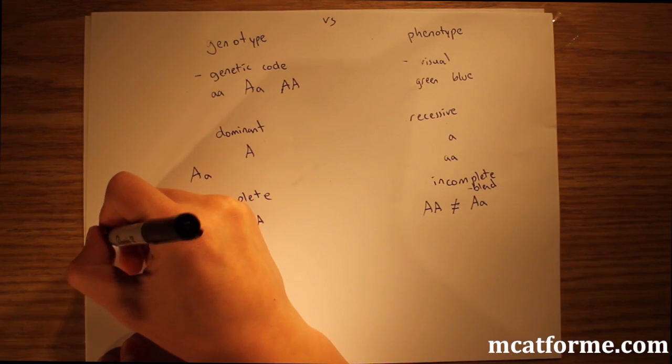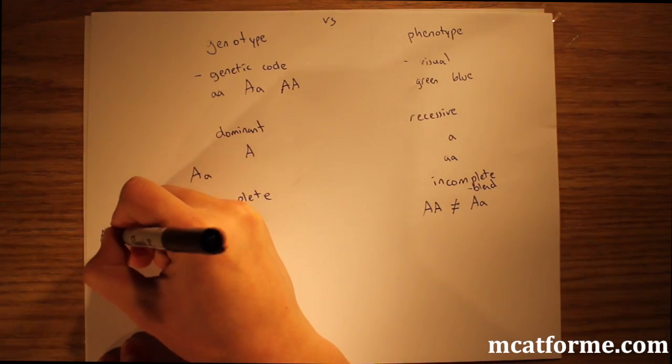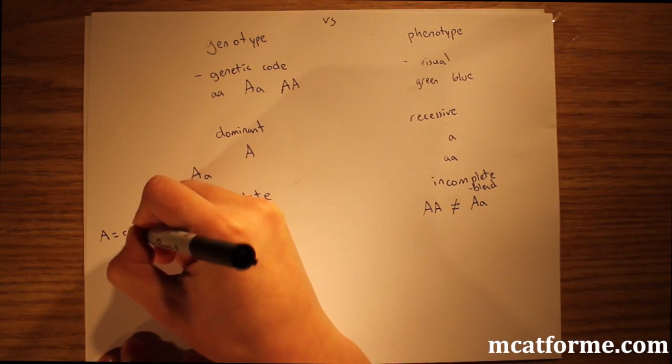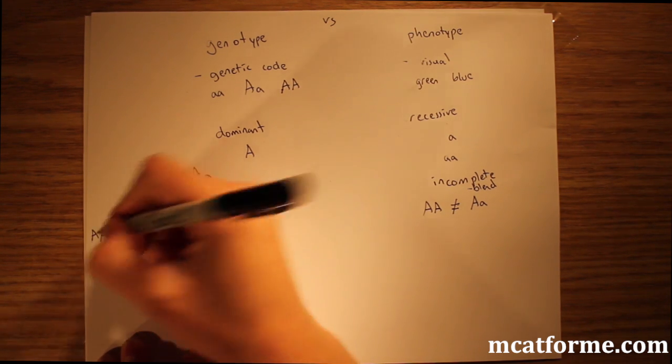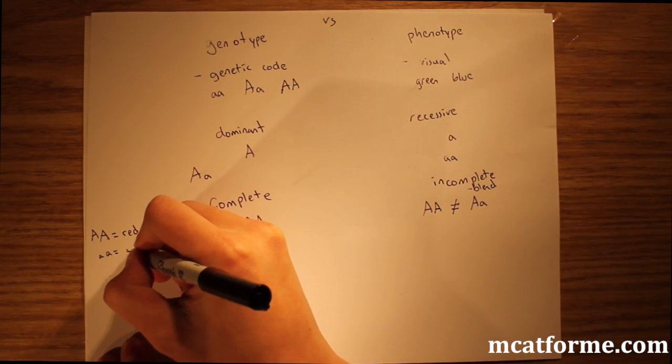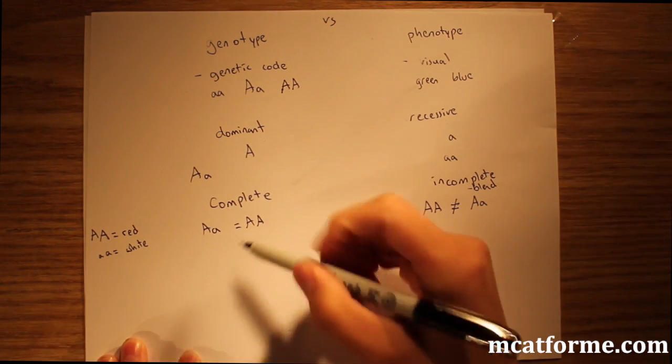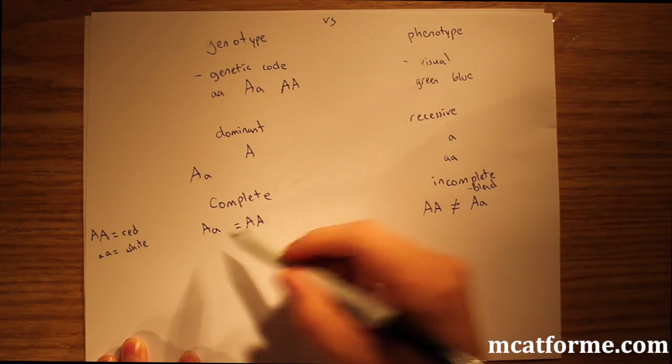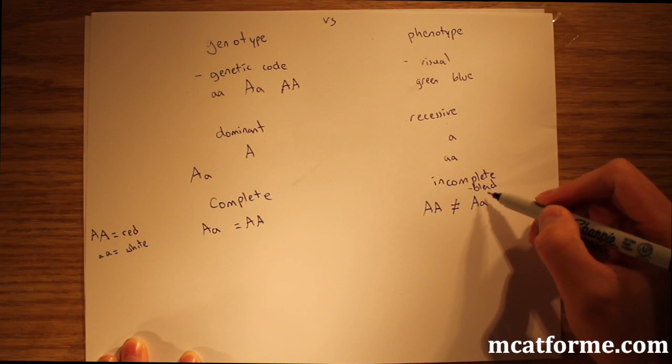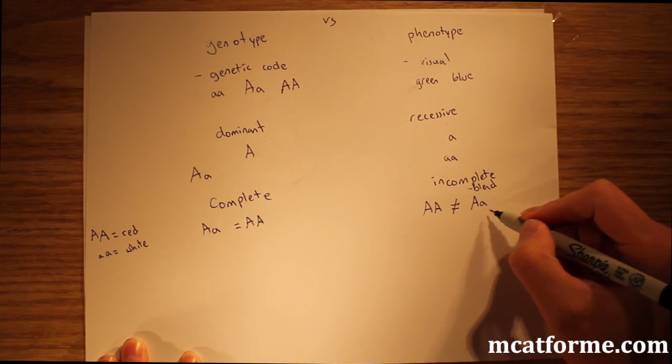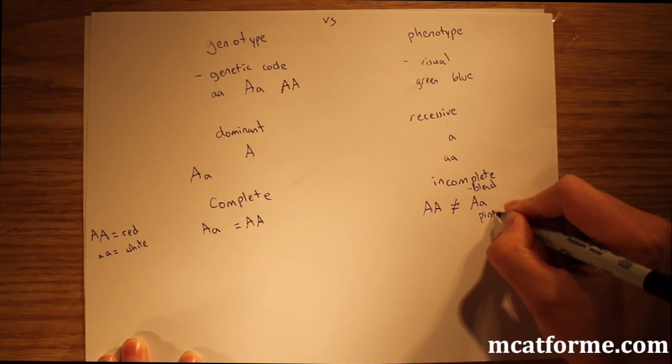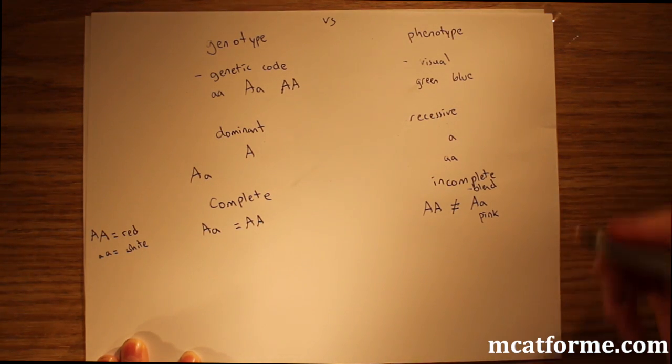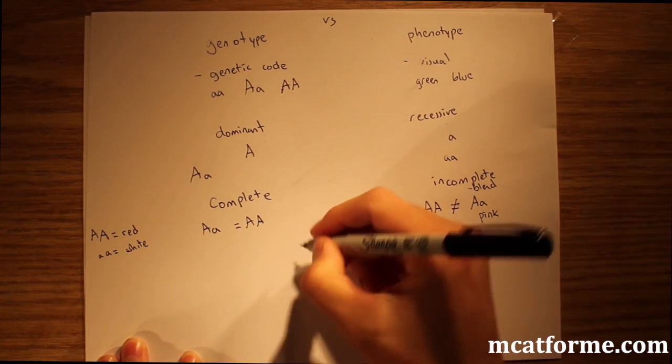Big A little a will be some type of blend. It'll be some type of blend between the two. So if we can imagine, for the next couple examples, big A big A is red and little a little a is white. For complete dominance, big A little a will still be red. For incomplete dominance, big A little a, the heterozygote will be a blend between the two, which will be something like pink.